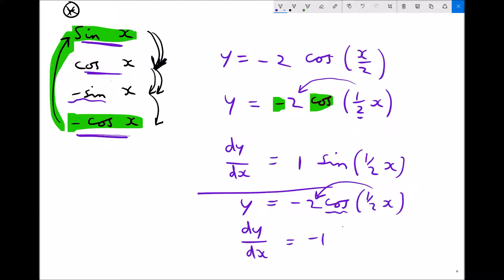Well, cos becomes minus sine. And in the brackets, we'll still have a half x. But what we've got here is we've got minus 1 times a minus. Well, a minus times a minus is a plus. So the outcome is the same. We still end up with 1 sine a half x, which is just sine a half x, or sine x over 2.